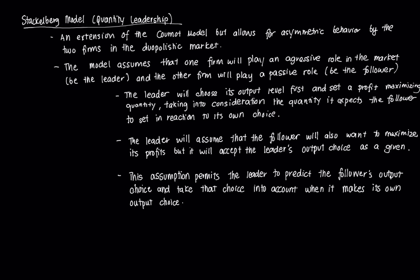Hi everyone and welcome to this video on the Stackelberg oligopoly model, which is essentially the quantity leadership model — the third type of model we will discuss. In the past few videos we discussed the Cournot model which sets quantity, and the Bertrand model which sets based on price. Now we're going to discuss the Stackelberg model, developed by German economist Heinrich von Stackelberg in 1934 as a criticism of the Cournot model. This model is essentially an extension of the Cournot model.